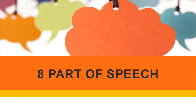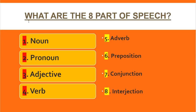So what are the 8 parts of speech? We have: number 1, noun; number 2, pronoun; number 3, adjective; number 4, verb; number 5, adverb; number 6, preposition; number 7, conjunction; and number 8, interjection. So this is the 8 parts of speech.